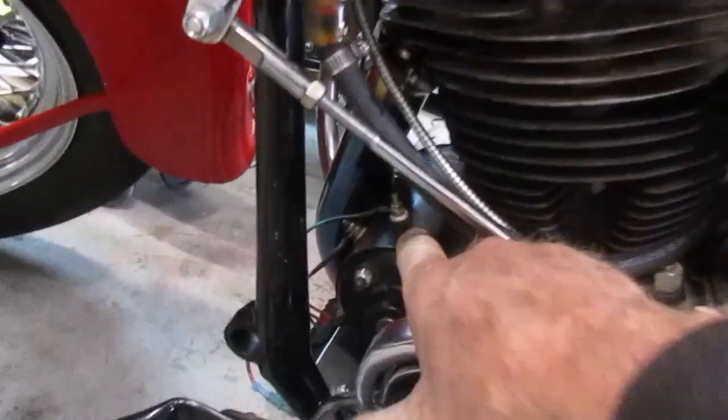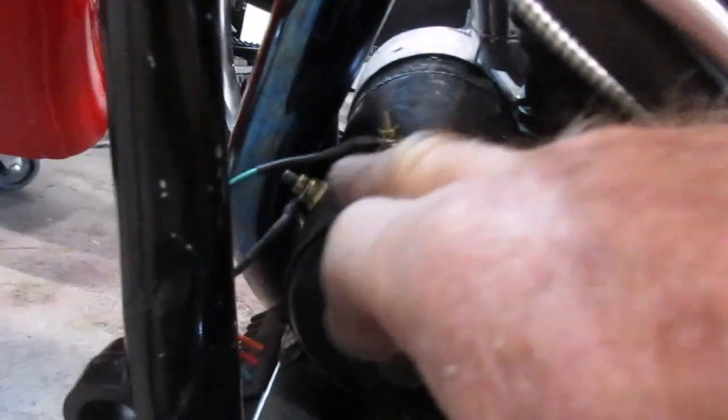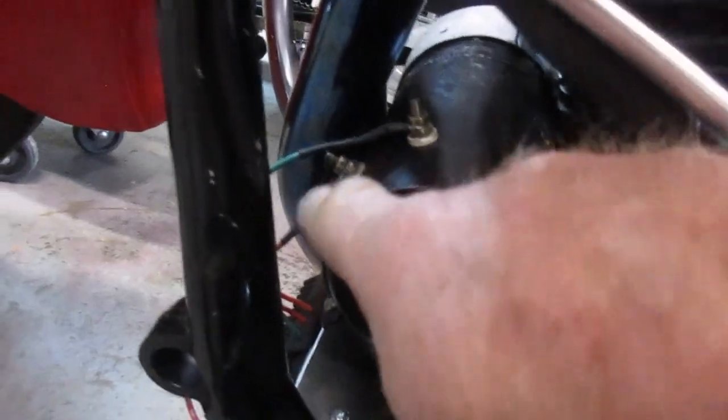This is a generator motor here. The generator is located in the front of the motor. At the top is field and the lower one is armature.